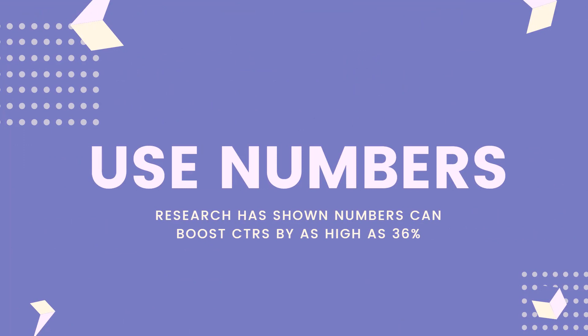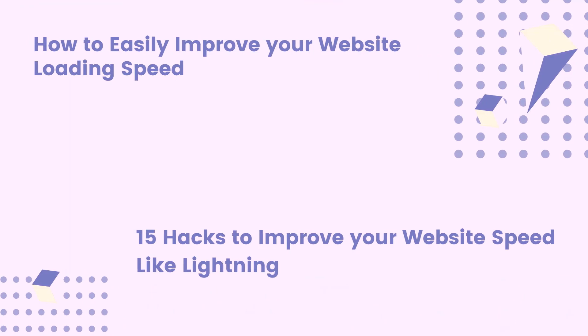Also use numbers — this is very important because research has shown that including numbers in your titles can boost your click-through rates by as high as 36%. Take a look at this example: 'How to easily improve your website loading speed' versus '15 hacks to improve your website speed like lightning.' The second one is better because the number 15 is very direct — it tells the reader exactly how many hacks they'll discover. And 'like lightning' creates an emotional image in the person reading your title.